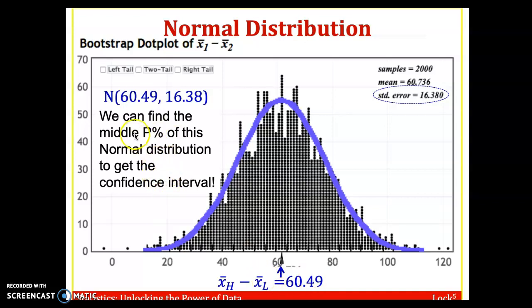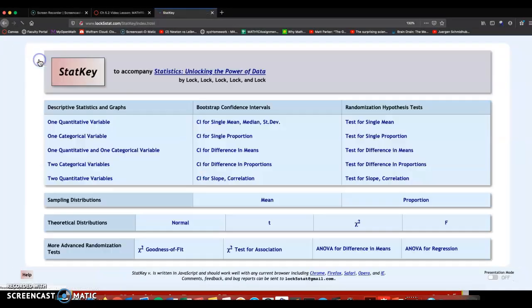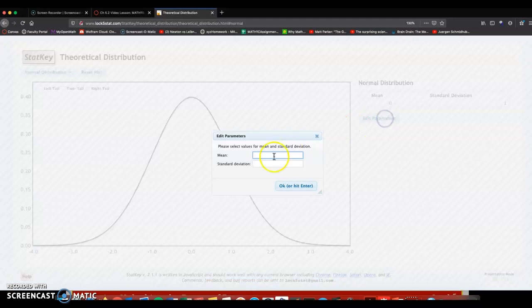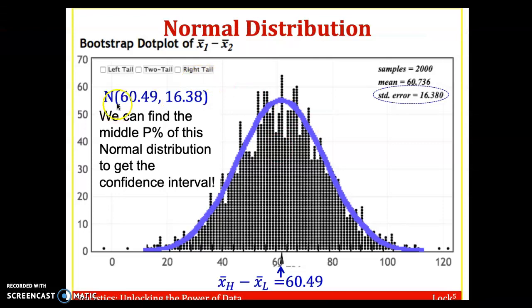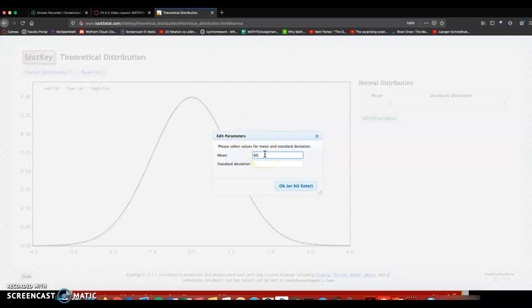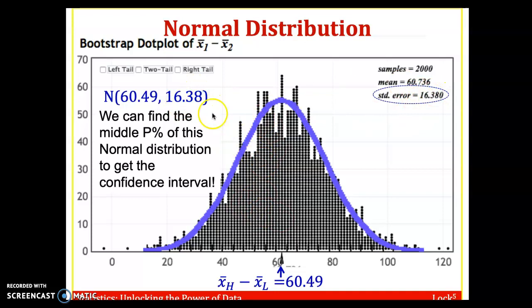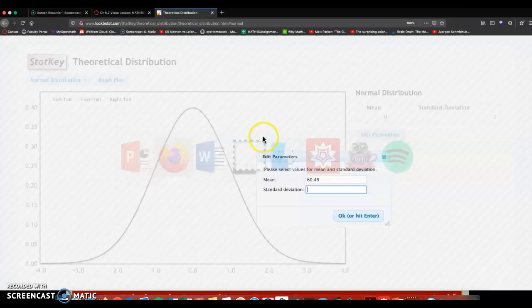Now for normal distributions, once you're on the main screen, it's down here to the right of theoretical distribution. Click on normal and edit parameters. So here I've got the mean, that should be 60.49. And here the standard deviation, that's going to be the standard error of the sampling distribution, 16.38.